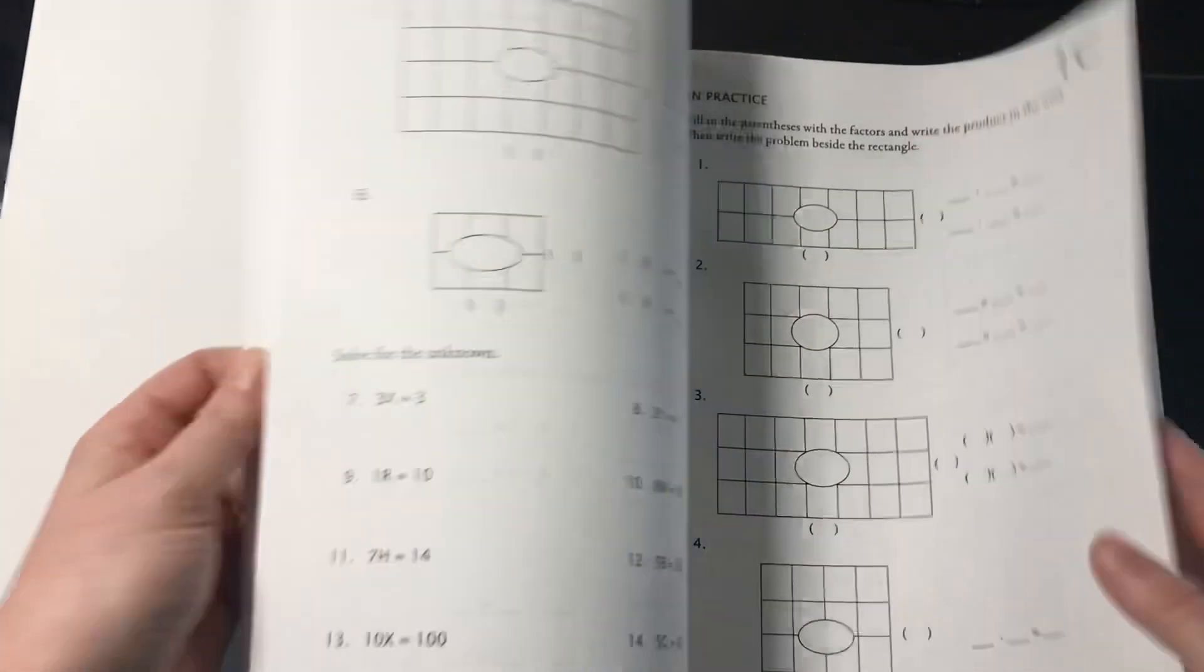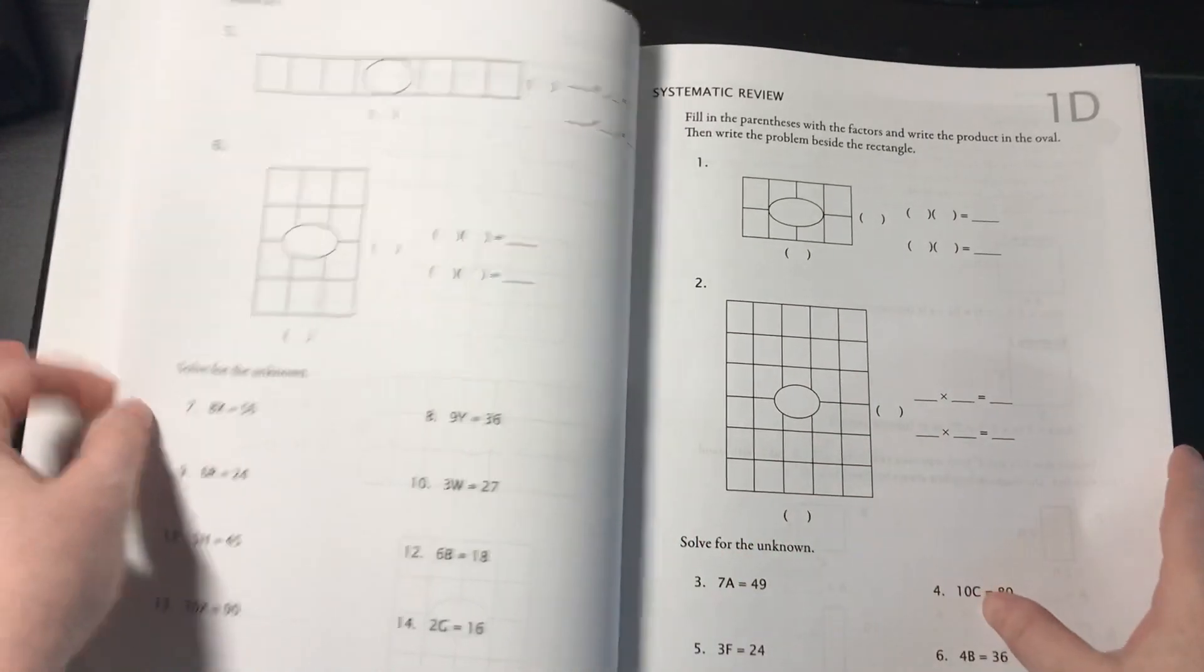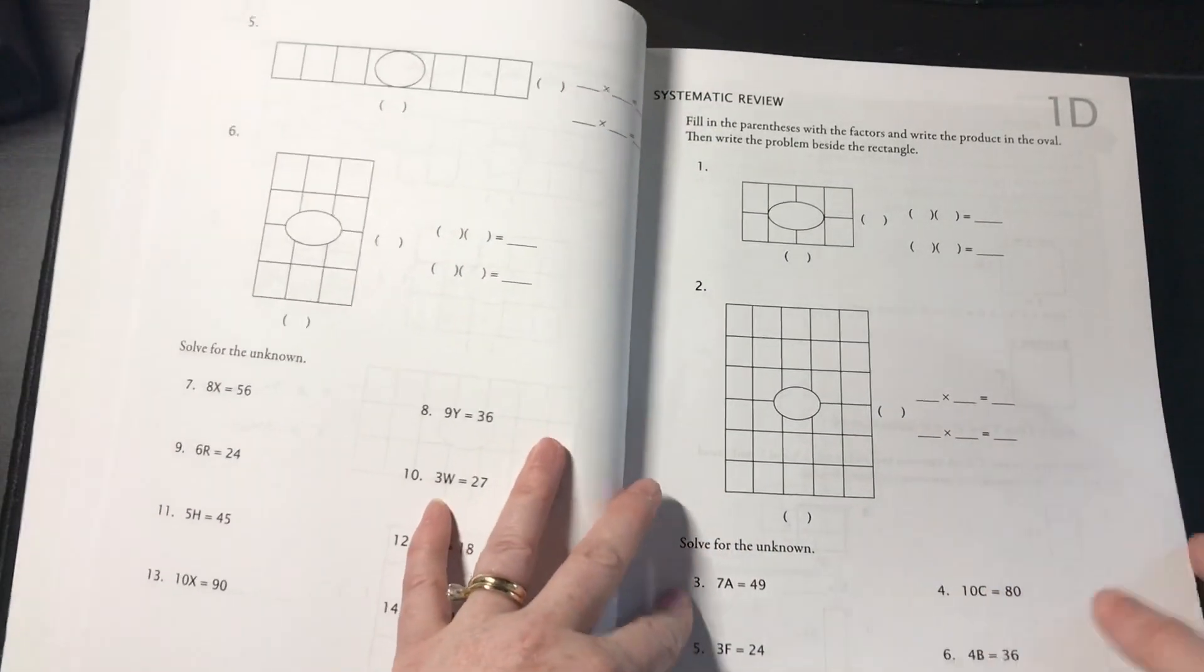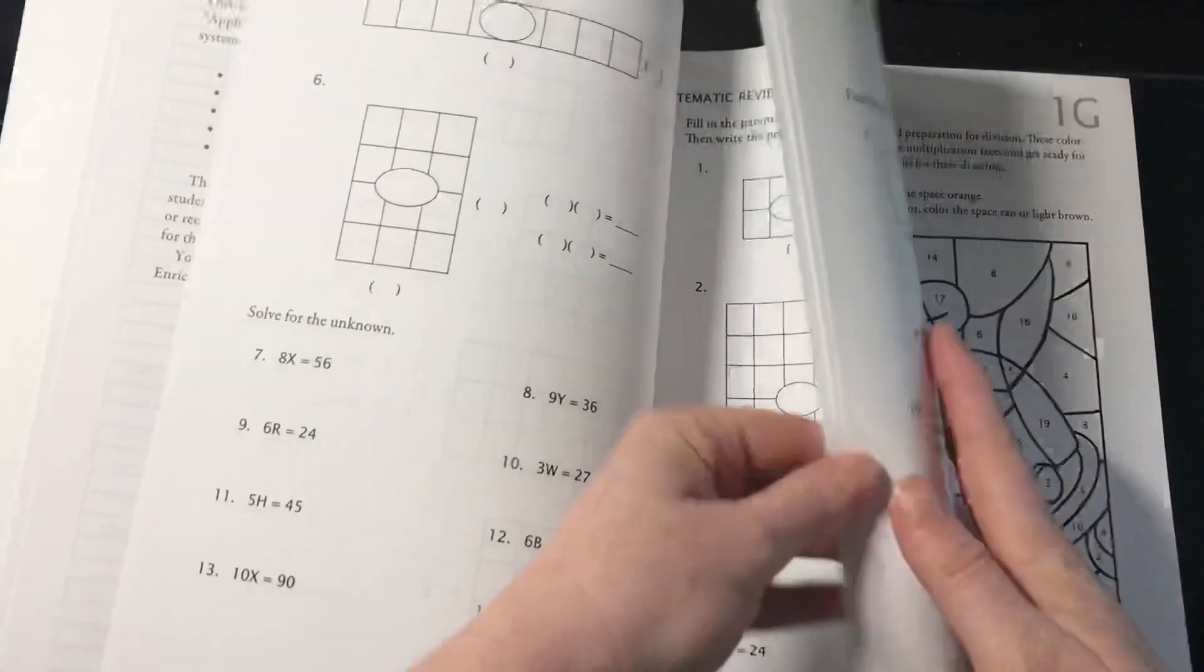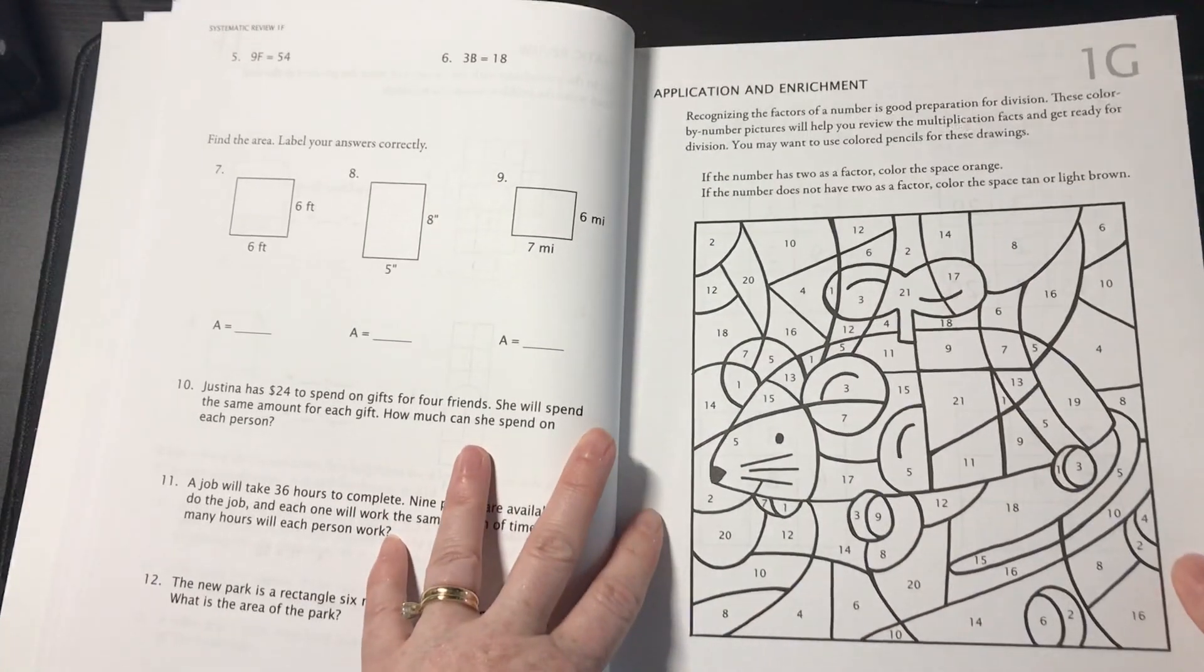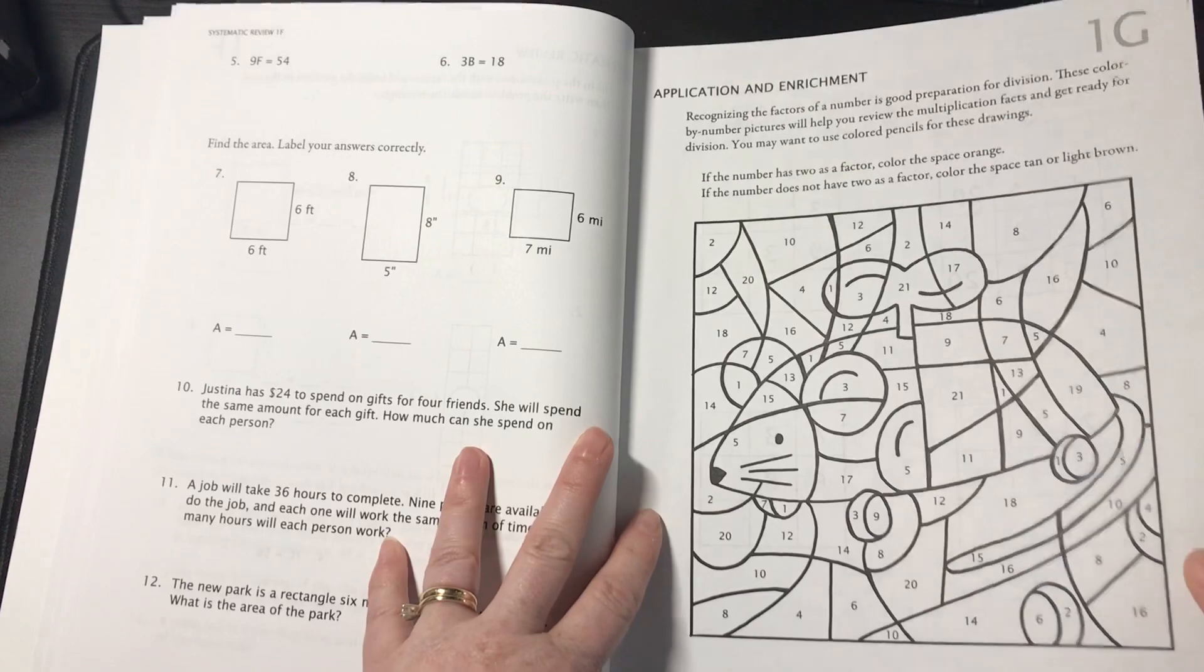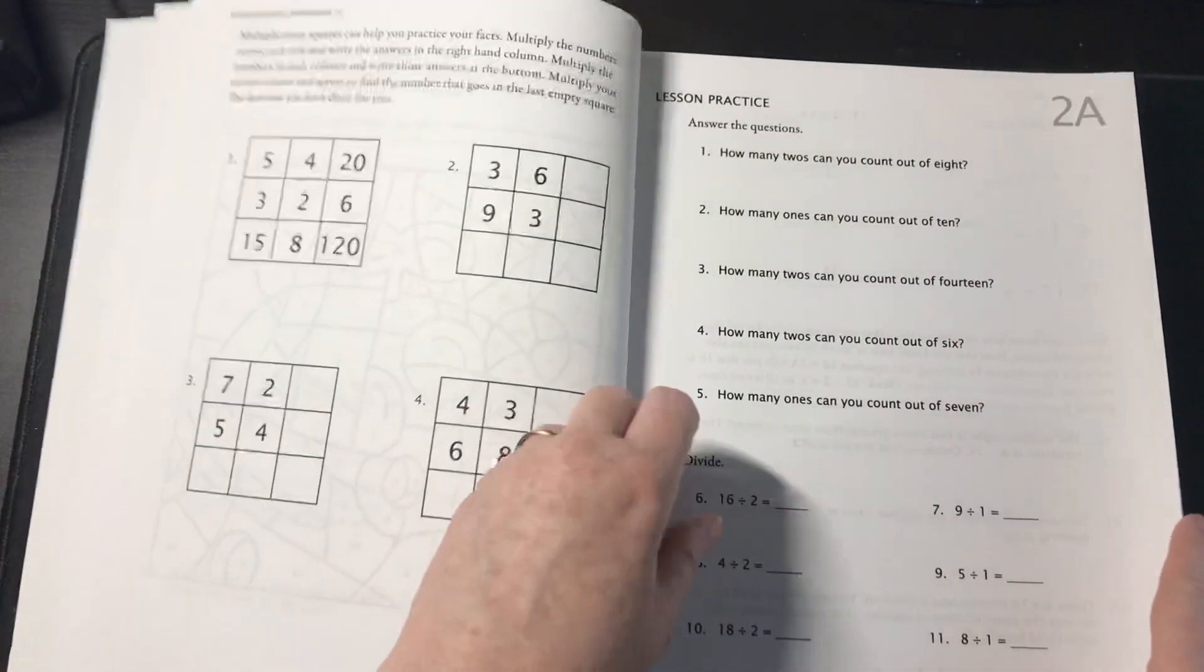And also usually how it works is that worksheets A, B, and C are kind of like the new concept. And then D, E, and F have the new concepts plus review. So here they're working on factors with a little coloring page. And then lesson 2A.